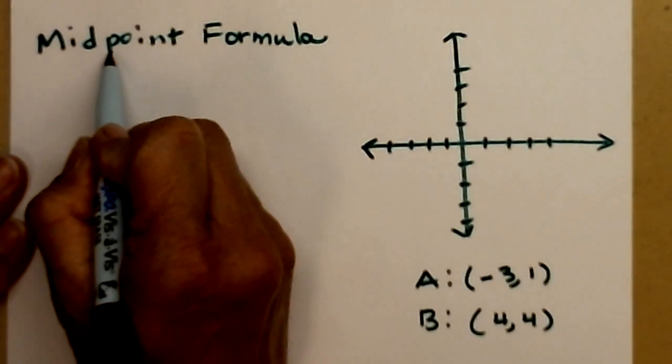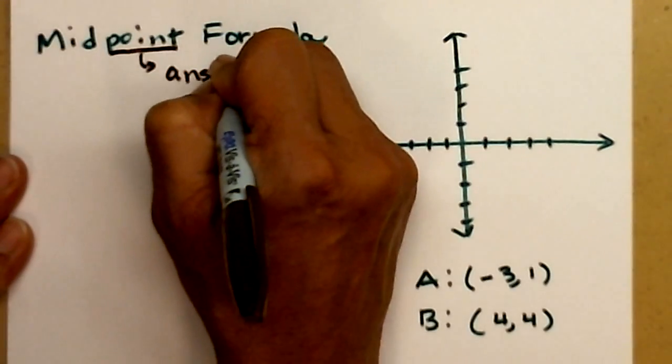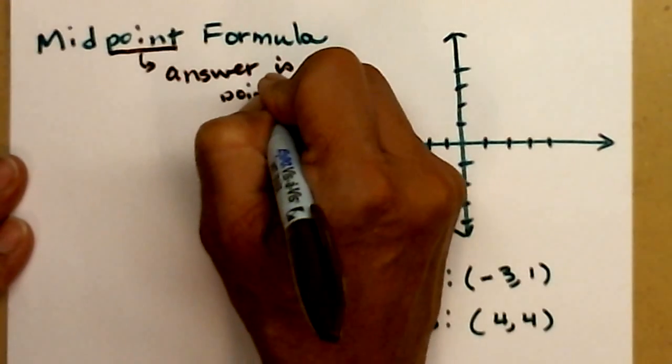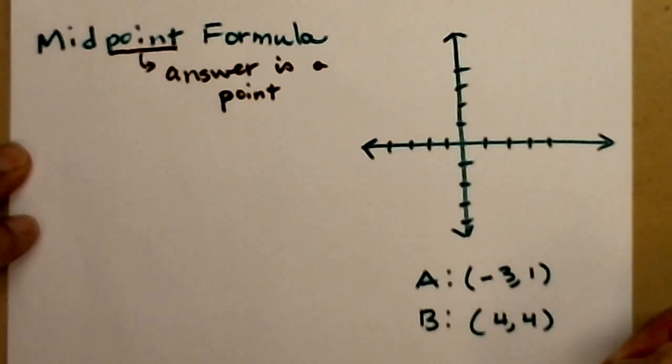Some key things there is the word point means your answer is a point, which means it should look like a point with all of those things that ordered pairs have, parentheses and commas. And mid, it's in the middle. And the best way to find the place in the middle is to average. And so that's all you have to do.